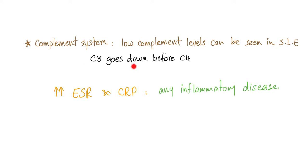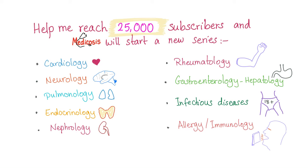The complement system: low complement levels, particularly C3 and C4, can be seen in lupus — C3 usually goes down before C4. High ESR and CRP — erythrocyte sedimentation rate and C-reactive protein — are elevated in any inflammatory disease and are very non-specific.